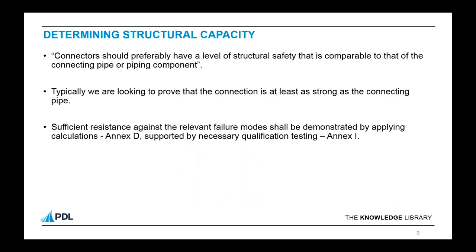Moving on to determining structural capacity: the requirement from the code is that the connection has a level of structural safety comparable to that of the connecting pipe or component. Ultimately what we're trying to do is prove that any connection is at least as strong as the pipe. That makes the global assessment of the riser system simpler — when doing global riser analysis you're not worried about particular weak links and know the pipe will be the limiting capacity.